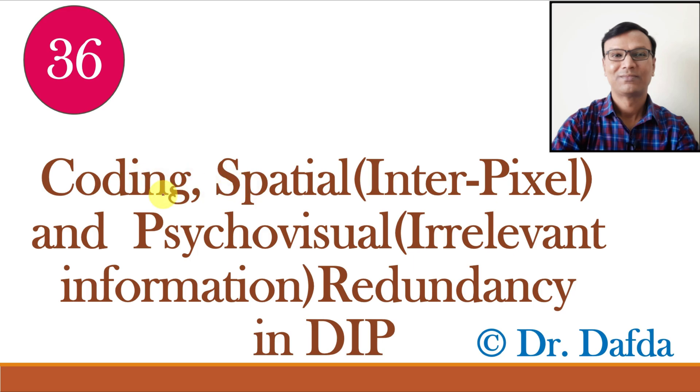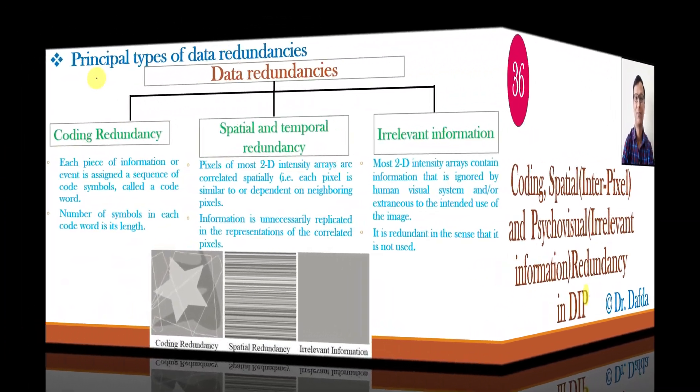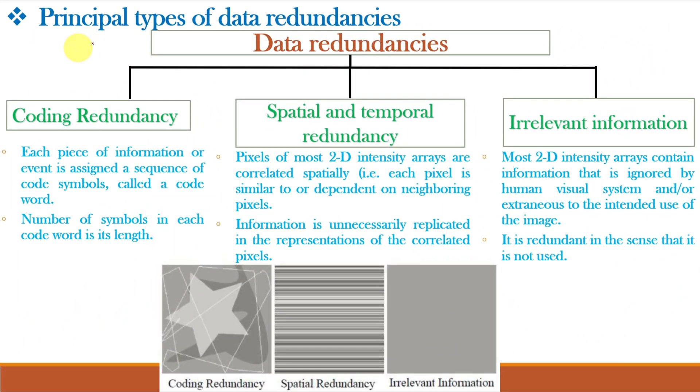we will study different types of redundancies: coding redundancy, spatial or interpixel redundancy, and irrelevant information or psycho-visual redundancy. We know from our previous video class that redundancy means repetitive information or unnecessary information.